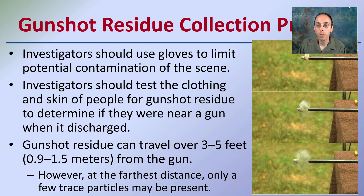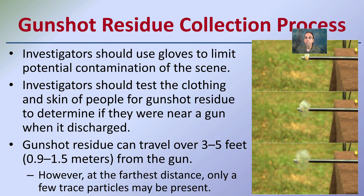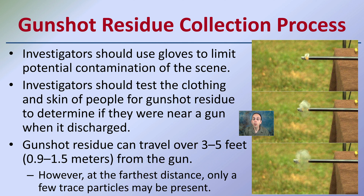Regarding the collection of gunshot residue: investigators should use gloves to limit potential contamination of the scene, because GSR is very fine and found in very small quantities. Investigators should test the clothing and skin of people for gunshot residue to determine if they were near the gun when it was discharged. As those images showed, it's not just around the gun — there is some expansion of that residue at least near the site of that initial explosion.